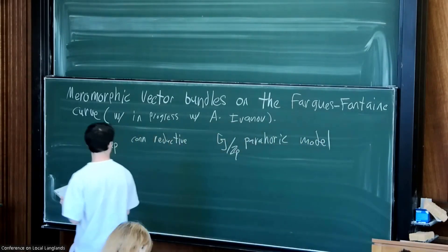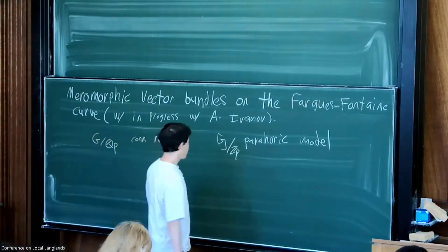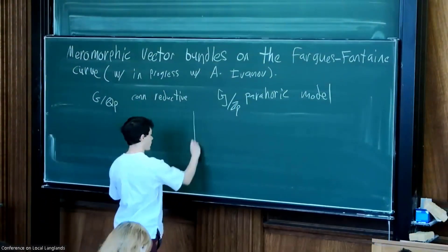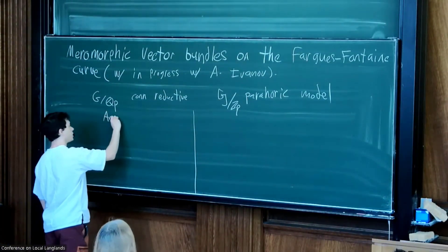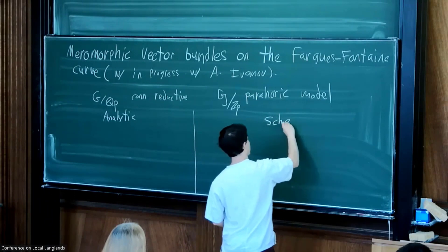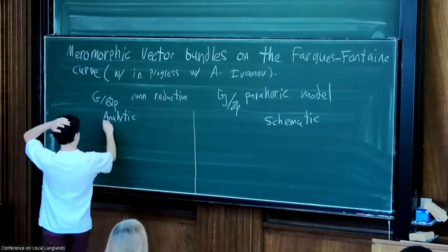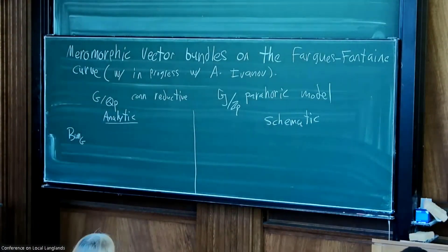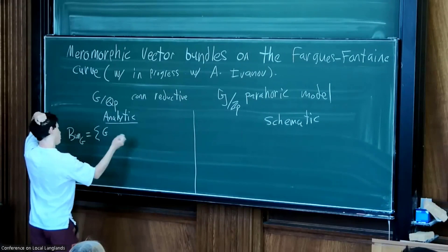Let me start with some motivation. We're trying to connect two stories. On one side we have a very analytic story, and on the other side we have a very schematic story. In the analytic theory the main players are this geometric object Bun_G, which already appeared in David Hansen's talk — this is the small B-stack classifying G-bundles in the Fargues-Fontaine curve.